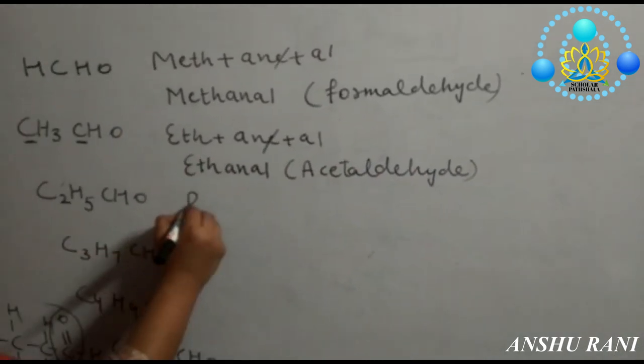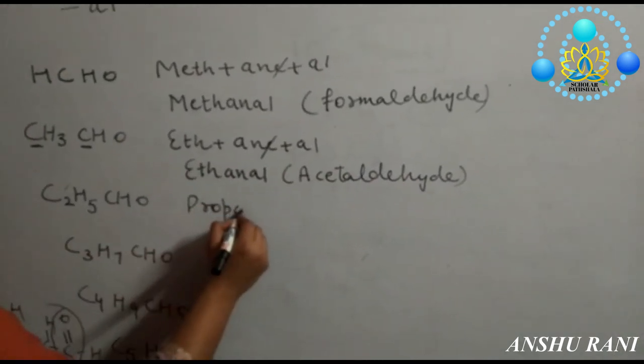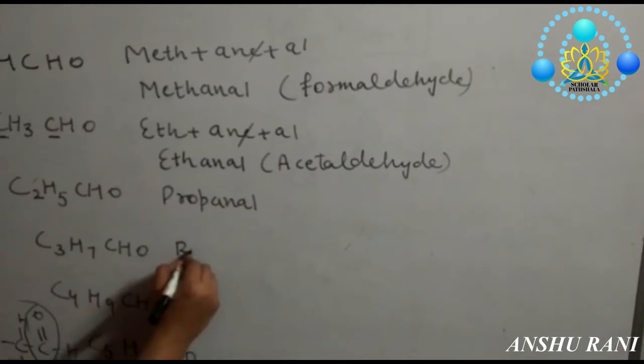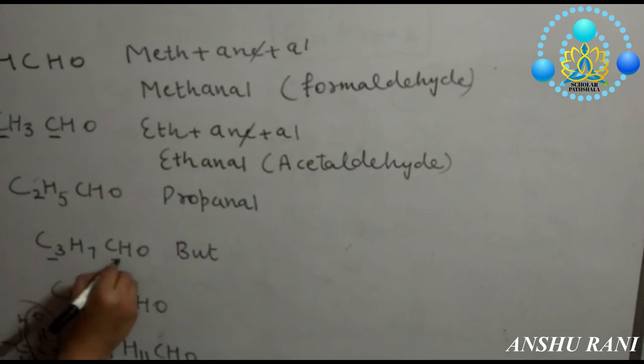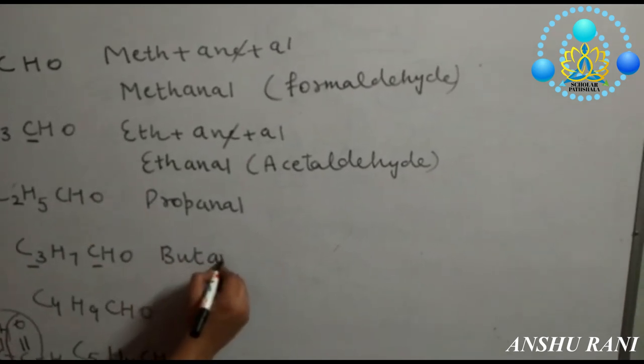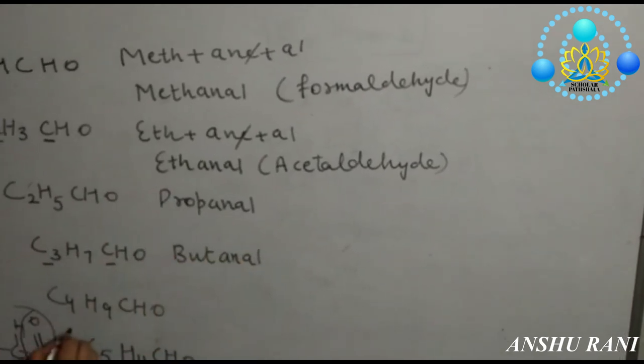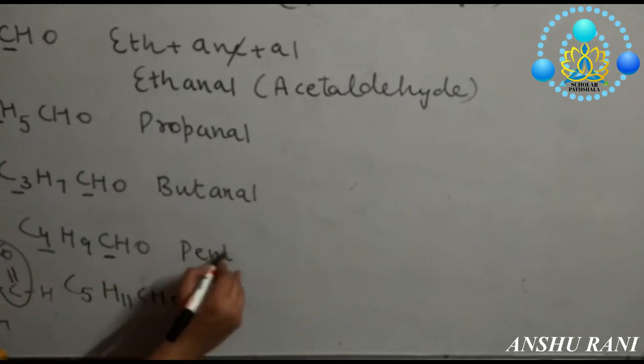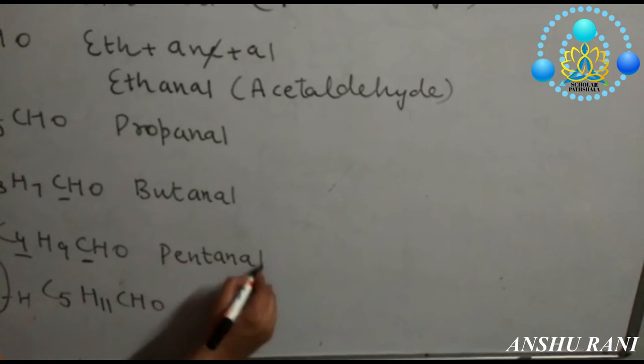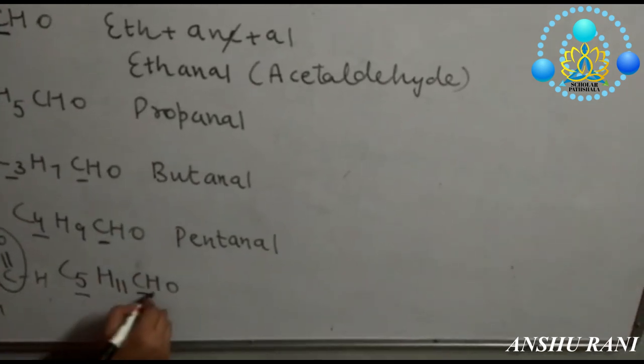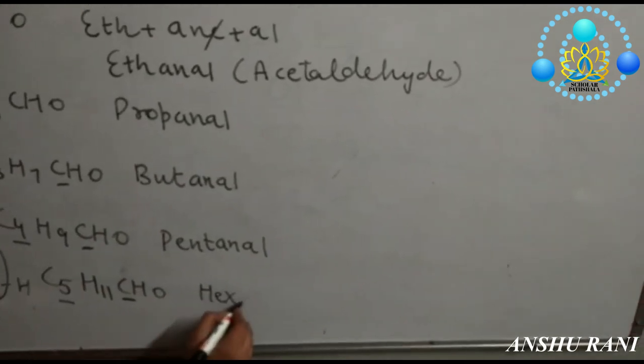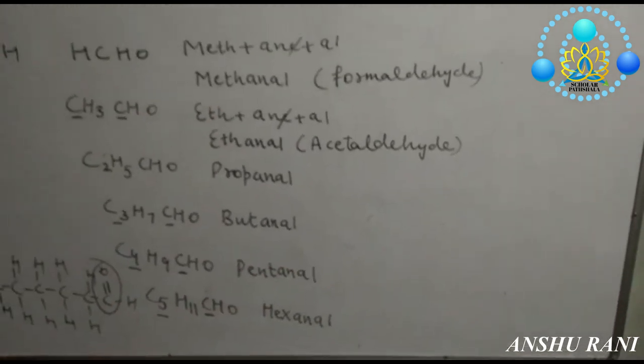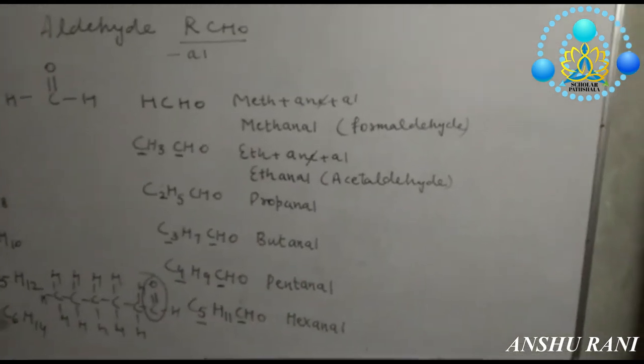So its name would be eth plus ane plus al: ethanal, also known as acetaldehyde. It is prop plus ane plus al: propanal. It is butane plus al: butanal. It is pentane plus al: pentanal. It is hexane plus al: hexanal. According to this, you have to write the names when compounds are containing functional groups.